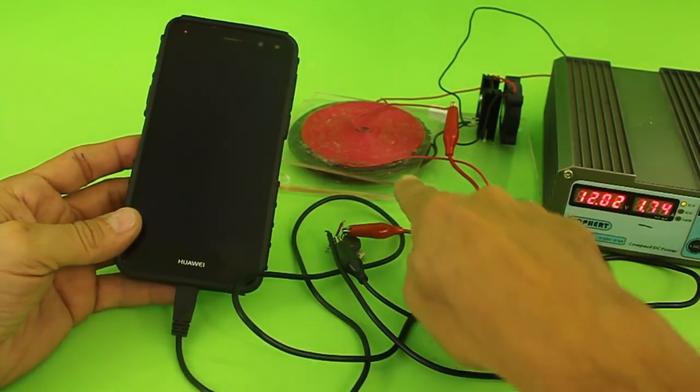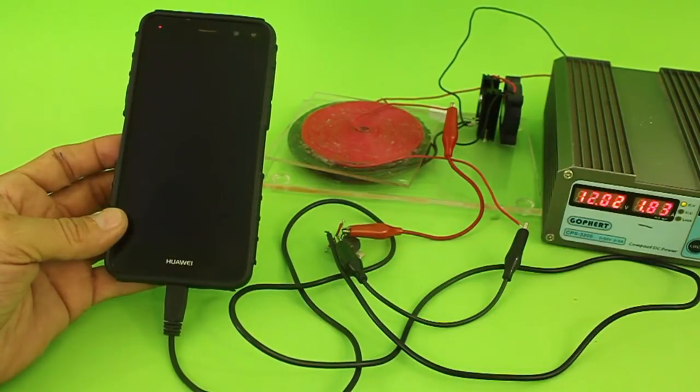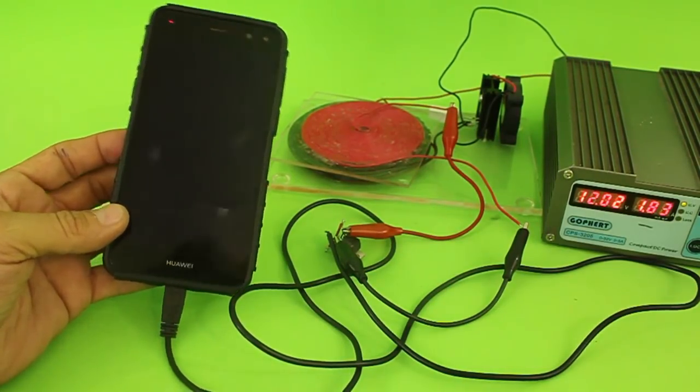The coils need to be close to each other, otherwise we will not have enough voltage for charging the phone.